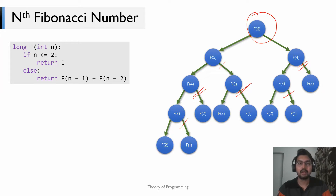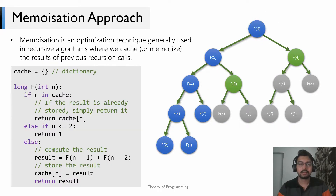Now that we've shown the nth Fibonacci problem has both optimal substructure and overlapping sub-problems, let's see how to make it faster using dynamic programming. A new term: memoization. Memoization is basically caching the results of each function call, so when the function is called with a certain input we compute the result and store it, and return that stored result on repeated calls.